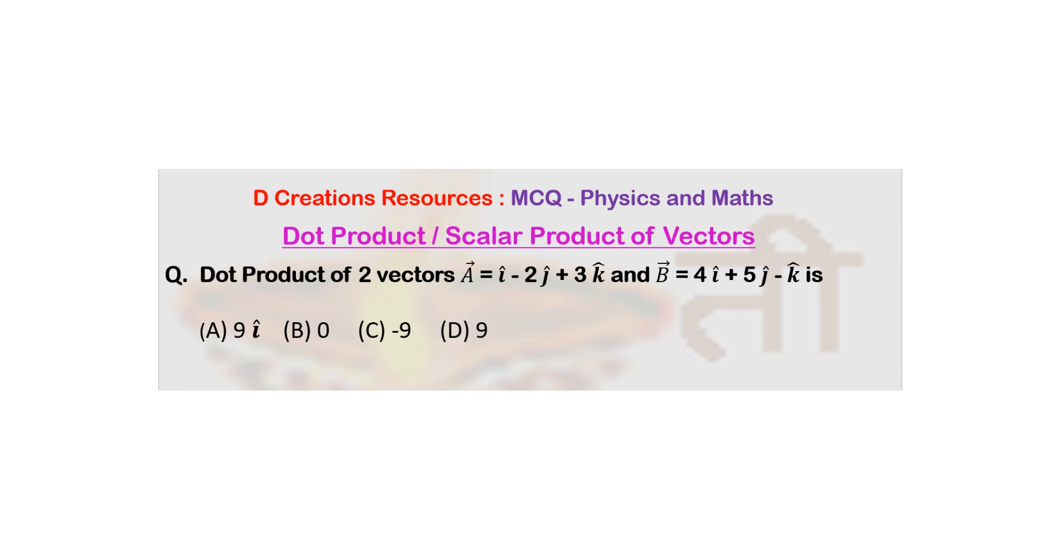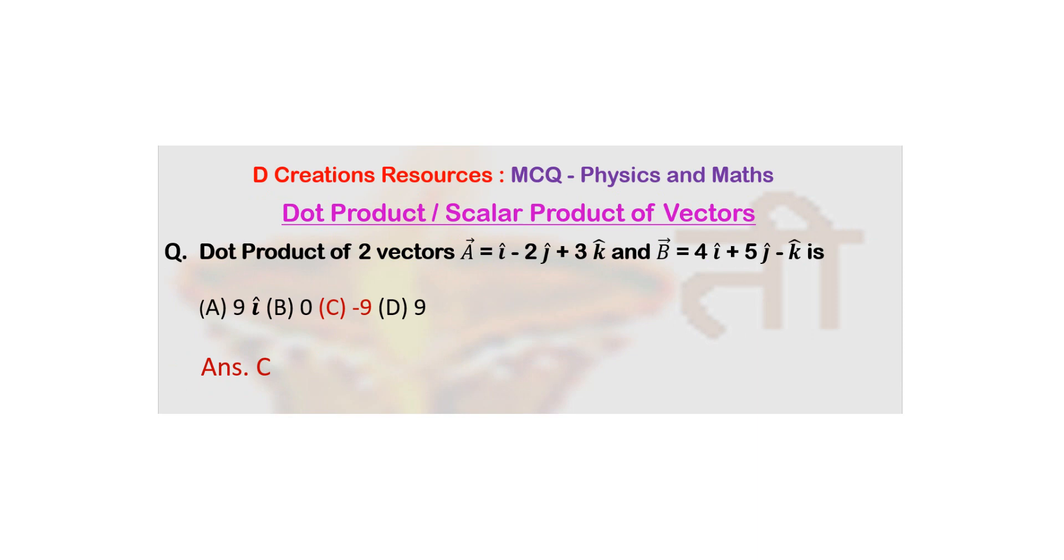In fact in this question the first option is ruled out then and there. Because the answer has to be a scalar. It has to be a number. It cannot be a vector. So anyway first option was ruled out and for the other options you have to calculate it. So going back and showing you the final answer, C is the correct option.